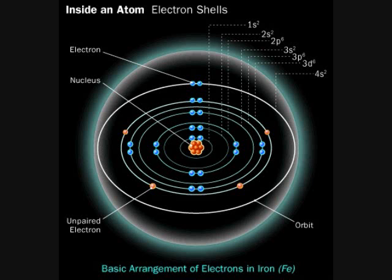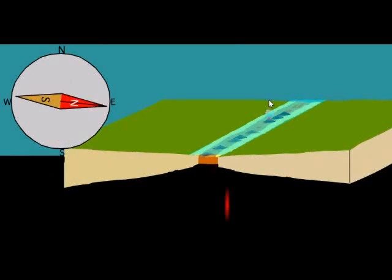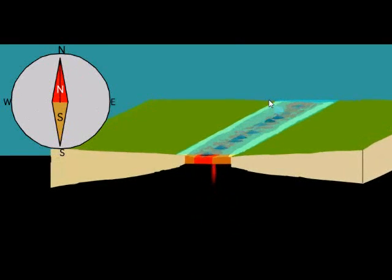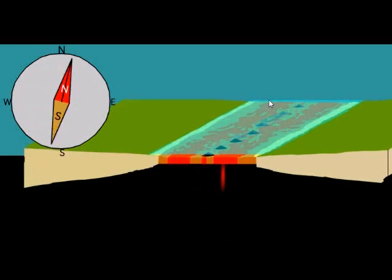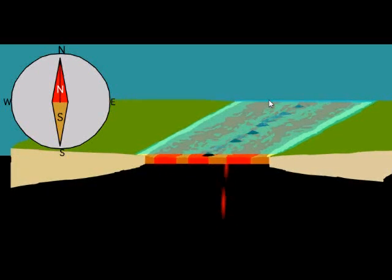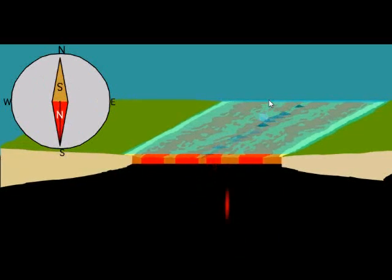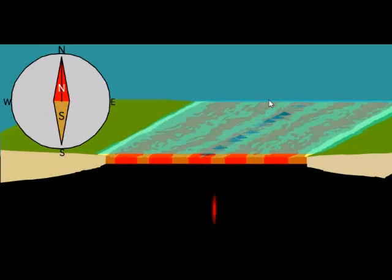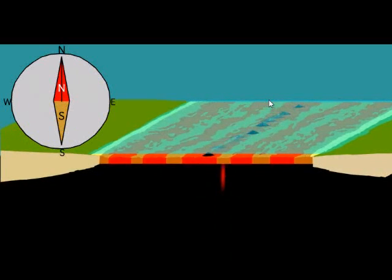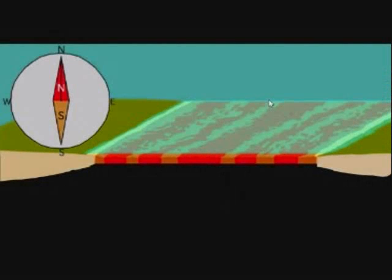Now, for some reason that scientists still don't know why, every 600,000 years or so, the Earth's magnetic field changes direction — from north to south or from south to north. On the bottom of the ocean, you can observe these stripes and measure how these lava flows over time change magnetic direction. One strip will be magnetized in one direction and the next in the opposite direction, creating stripes.